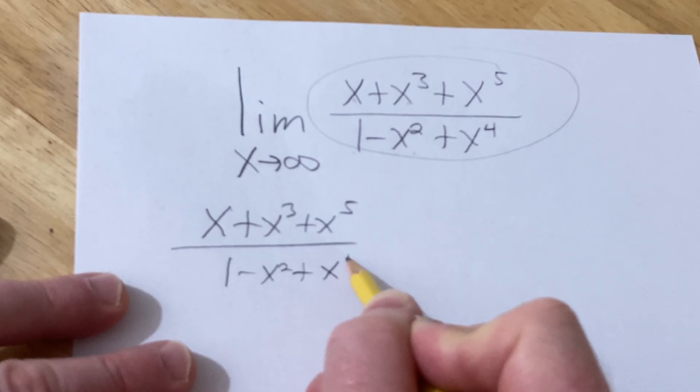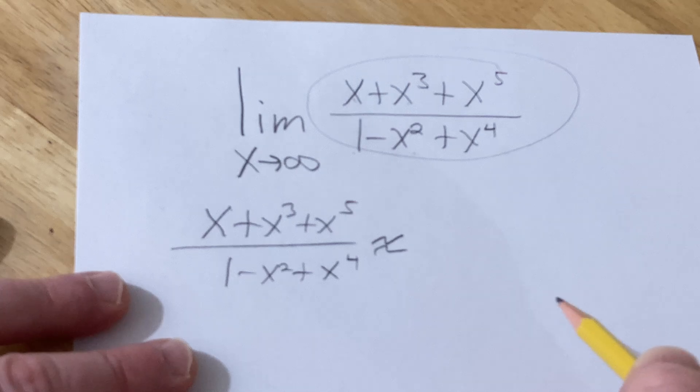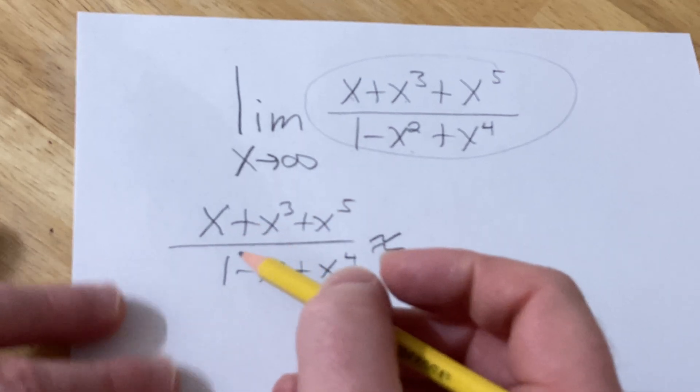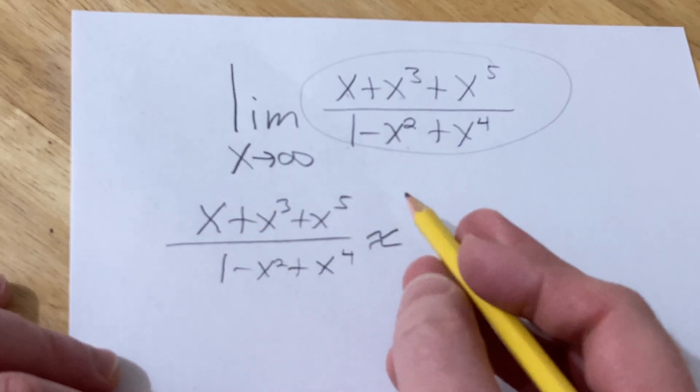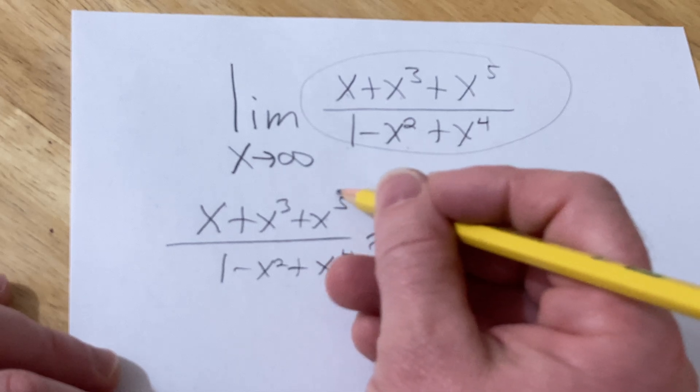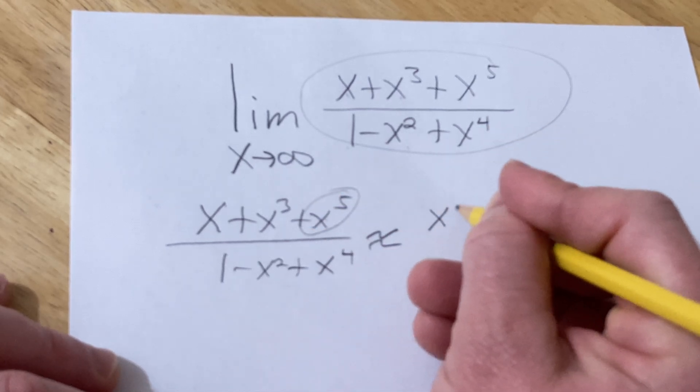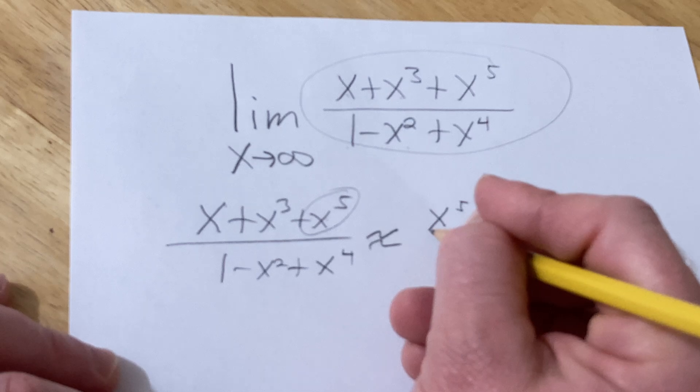So basically, x is getting really, really big. So when x is really big, we can ignore the terms of lower degrees. The highest degree term is here, so you can think of this as approximately equal to x to the fifth.